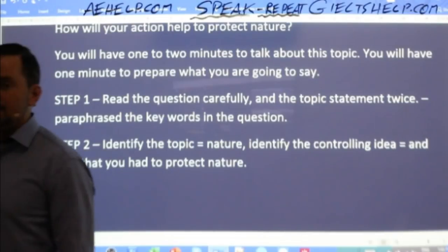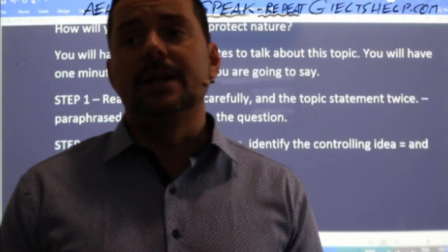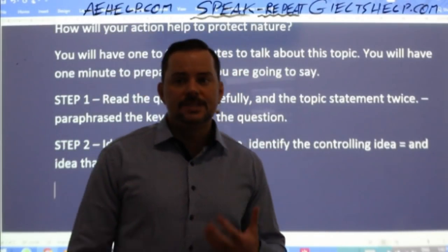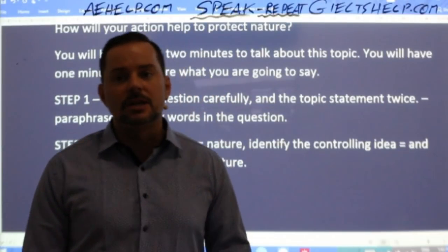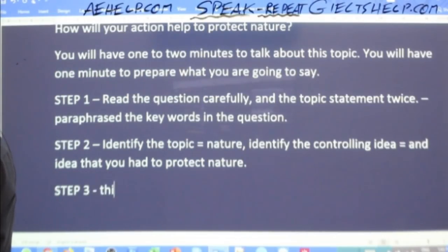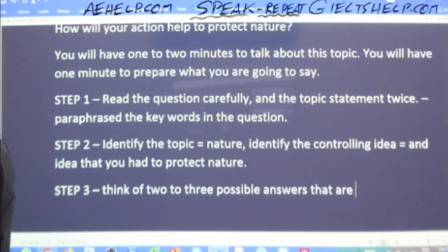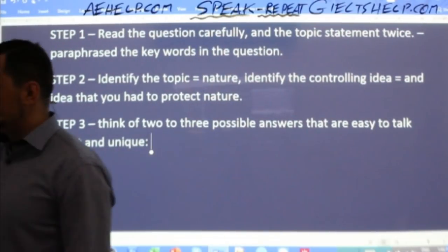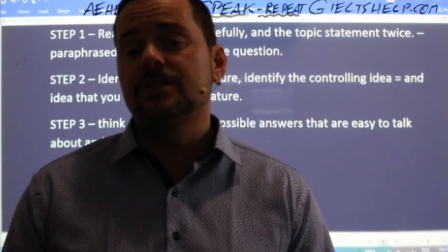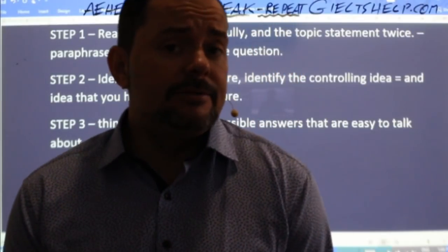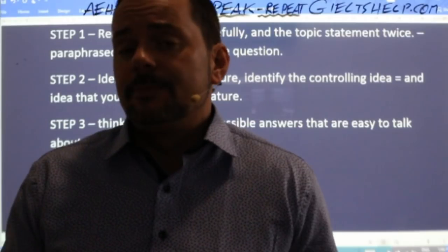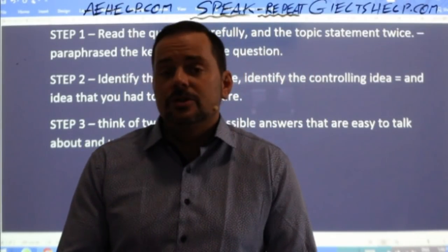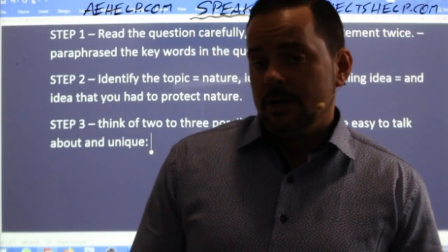Now you're 100% confident you're going to be talking about the right ideas. Step three: think of two to three possible answers that are easy to talk about and unique. What are some ideas that help to save nature? Maybe you've had a chance to think about how you can help, or maybe it's not your cup of tea — but you have to answer. You can't say 'I've never done this before.' You have to use your visualization and creativity, remembering what you see on TV or in the news about people trying to save nature.